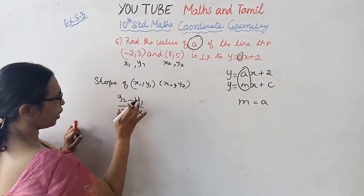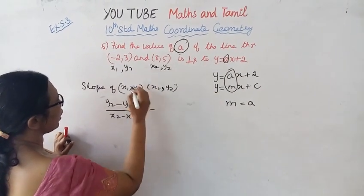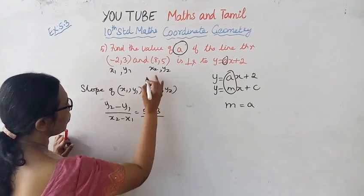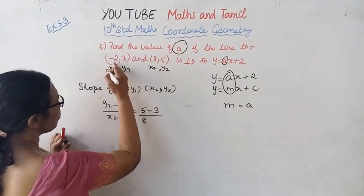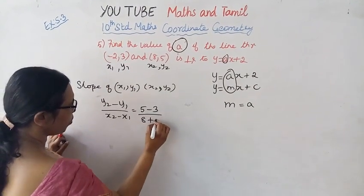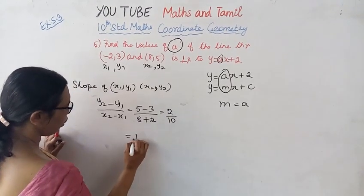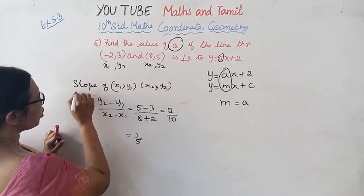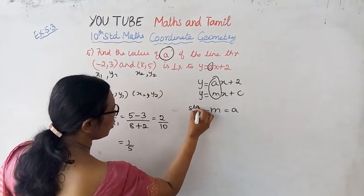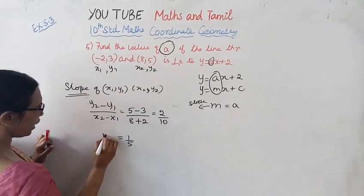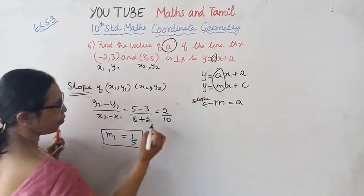Y2 is 5, Y1 is 3, X2 is 8, X1 is minus 2. So the slope is 5 minus 3 divided by 8 minus (minus 2), that is 2 by 10, which equals 1 by 5. This is M1. M1 equals 1 by 5.